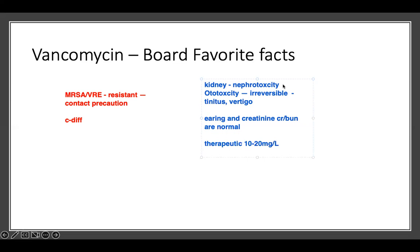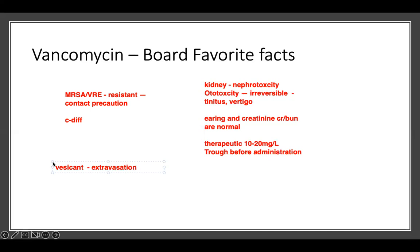We have to check it often to make sure we don't go past the therapeutic range. You draw the trough before you give any dose — and this applies to every medication that has a very narrow therapeutic range. Draw the trough before you give any infusion. This medication is a vesicant.